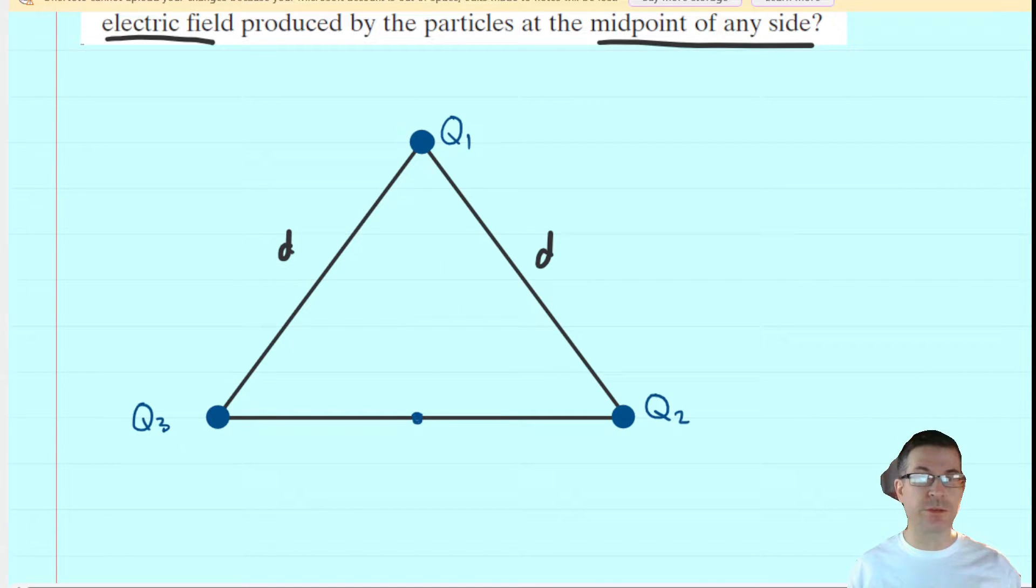In order to determine electric field directions, we use a positive test charge. So imagine placing a positive charge at this midpoint and then ask yourself, what direction would Q1 push that positive test charge? Would it push it away from Q1? Would it pull it towards Q1?